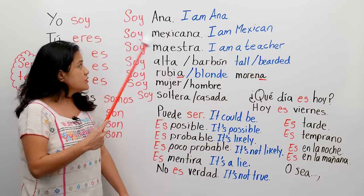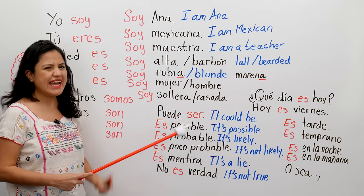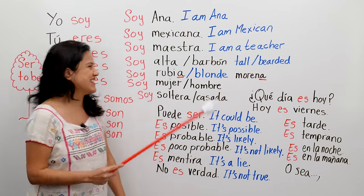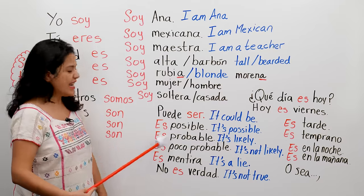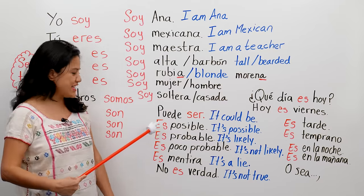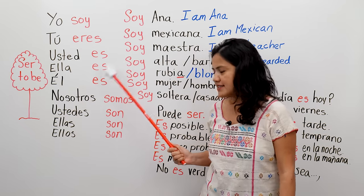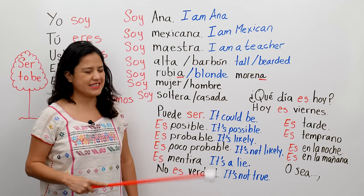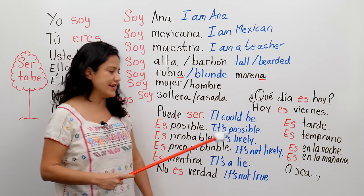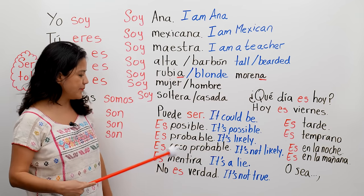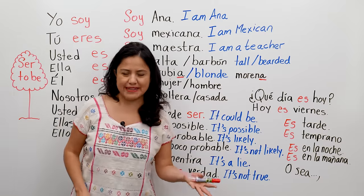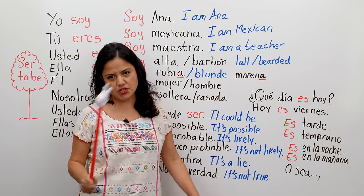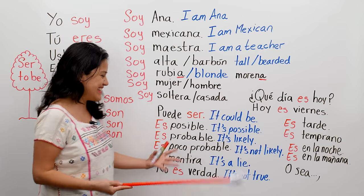Soy Mexicana — puedes responder: 'es posible' — it's possible. Soy maestra — 'es probable' — it's likely. I'm using the 'es.' 'Es probable' — it's probable, it's possible. But you could say it's not likely: 'es poco probable.' You look more like Dutch — 'es poco probable, pareces holandesa.' Tal vez, ¿quién sabe? Puede ser.